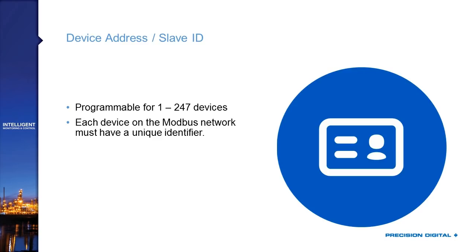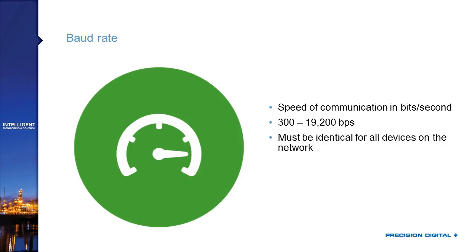Baud rate is the speed of communication. Digital communications always happen in time slices — checking whether it's a one or zero on the line. If those time slices aren't synchronized across everything on the network, communication will fail. All devices need to be reading at the same speed to read those ones and zeros — that's what baud rate is. You'll usually see values between 300 and 19,200 baud. In most process applications speed isn't critical, and most things operate around 9,600 baud.